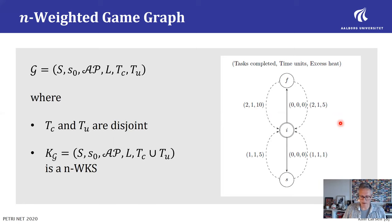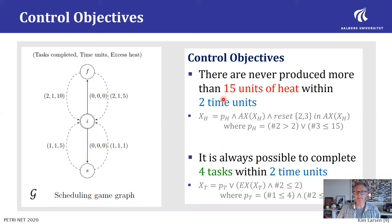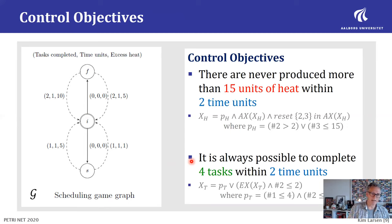As control objectives, we have properties expressed in our recursive weighted modal logic. It could be a conjunction of two objectives: one expresses that never more than 15 units of heat are produced within two time units. If that were all you wanted, always operating in slow mode would suffice. But you may also want it to always be possible to complete four tasks within two time units. The question is: can we find a strategy that, when added to this game, will satisfy the conjunction of these two properties?